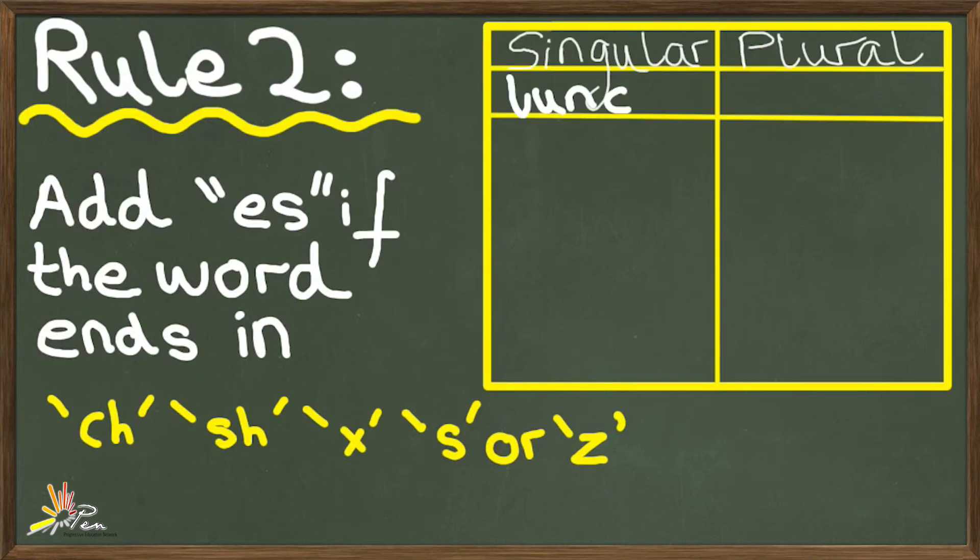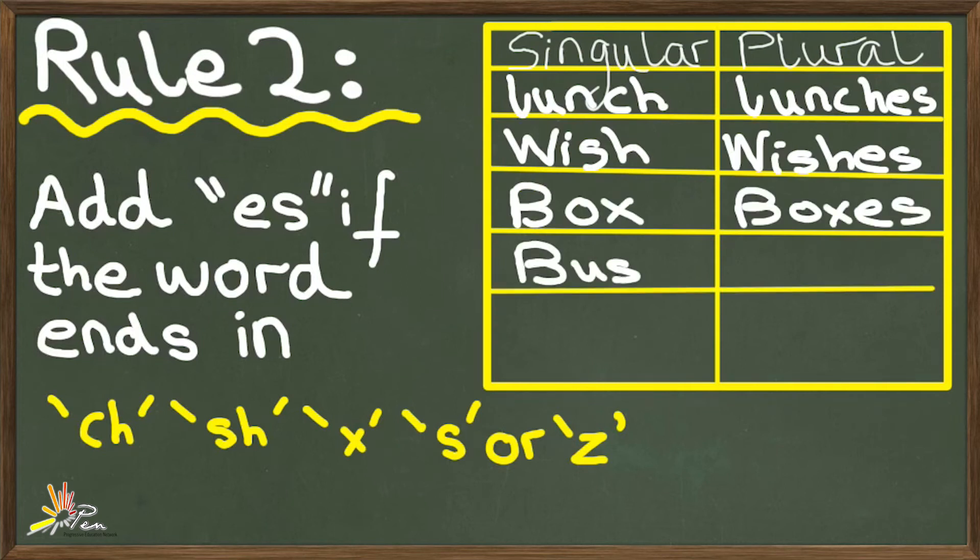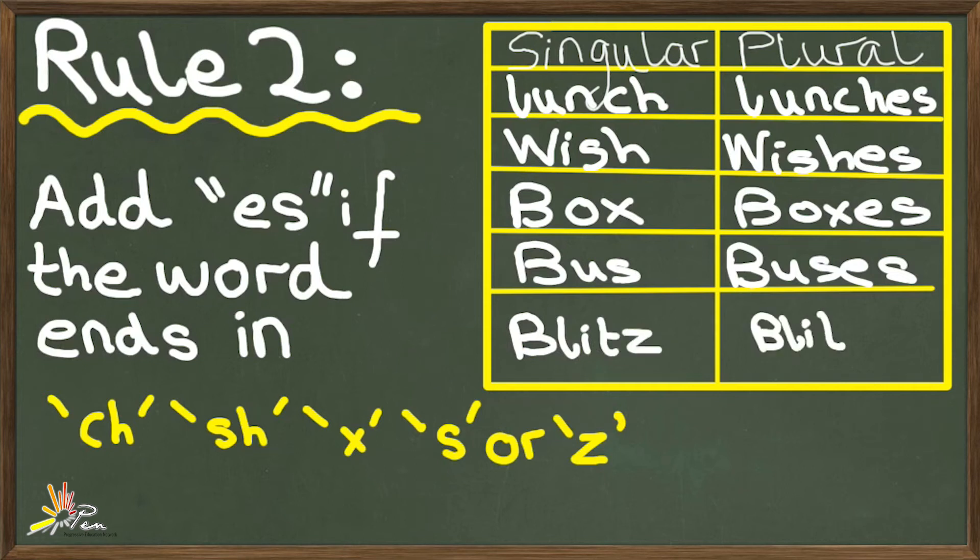Lunch ends in CH, so we have to make it plural by adding ES. It becomes lunches. Wish becomes wishes. Box, boxes. Bus, buses. Blitz, blitzes. Pause the video and try to think of some other words that become plural when ES is added to them.